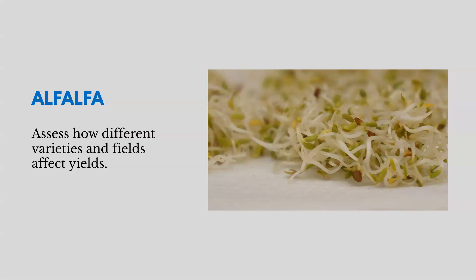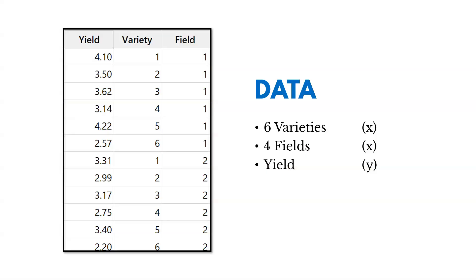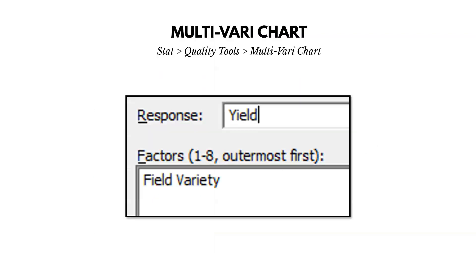Now let's look at alfalfa. We grow alfalfa and want to assess how different varieties and fields affect yield. We want a higher yield plant for a better return on investment. We gather data on six different varieties of alfalfa grown across four different fields and calculate the yield. The varieties and fields are our inputs; the yield is our output. In Minitab, we list yield as the response and field and variety as the factors.